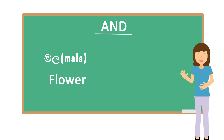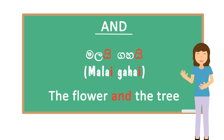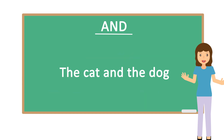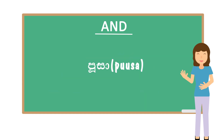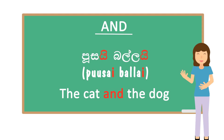For example, MALA means flower, GAHA means tree. But if you want to say 'the flower and the tree,' you say MALAI, GAHAI — add I at the end of each noun. How do you say 'the cat and the dog'? The word for cat is PUSA, the word for dog is BALLA. So PUSAI BALLAI means 'the cat and the dog.'